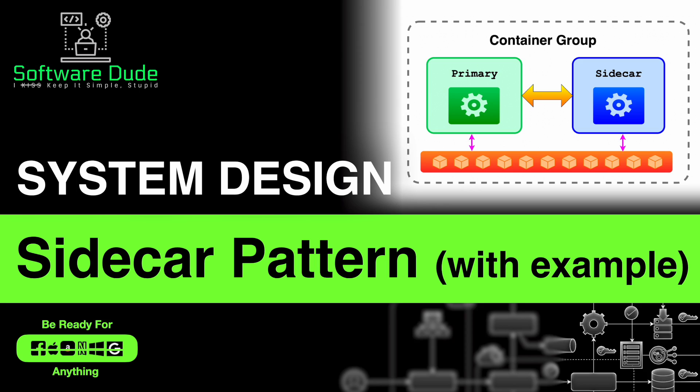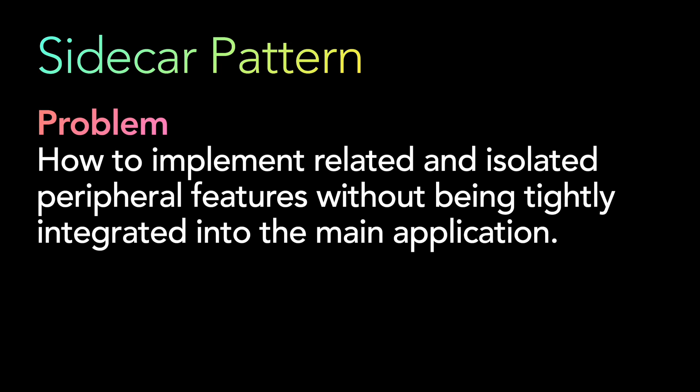Sidecar pattern — first, understand what the problem is. How do you implement related and isolated peripheral features without being tightly integrated into the main application? When you are building a microservice architecture or a huge application, there are a lot of functionalities which are not exactly in the critical path.